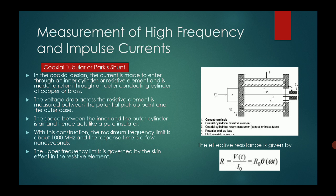The coaxial tubular or Park shunt: in the coaxial design, the current enters through the inner cylinder of the resistive element and returns via the outer conducting cylinder of copper or brass. The voltage drop across the resistive element is measured between the potential pickup point and the outer case. The space between the inner and outer cylinder is air, acting as a pure insulator. With this construction, the maximum frequency limit is about 1000 MHz and the response time is a few nanoseconds. The upper frequency limit is governed by the skin effect of the resistive element.